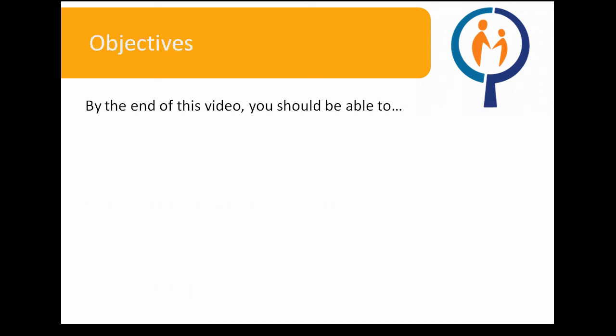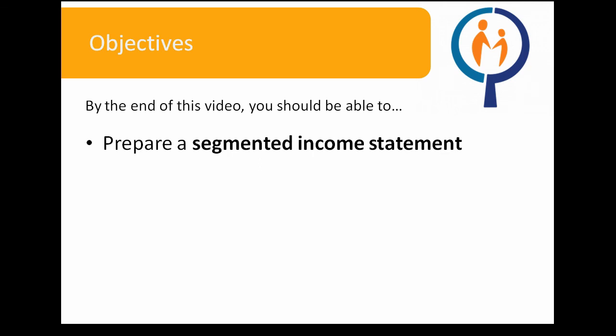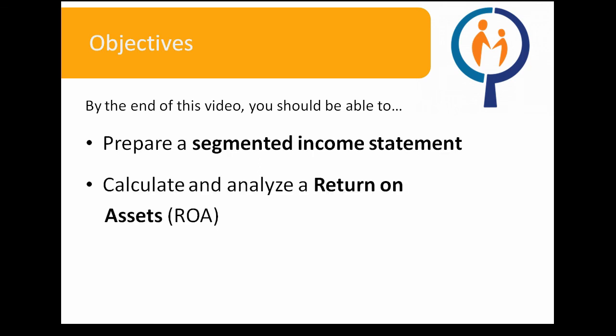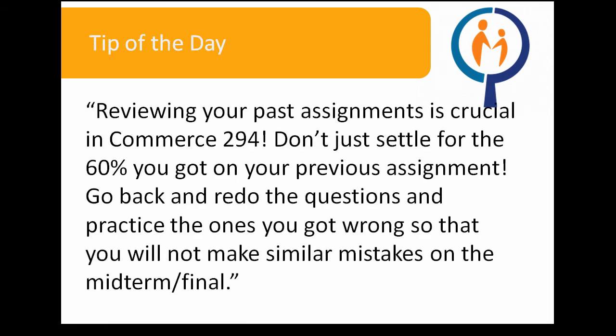This concludes our online tutorial on reporting for control. Let's review our objectives for today. By now, you should be able to prepare a segmented income statement, calculate and analyze a return on assets or ROA, and calculate residual income. Remember that reviewing your past assignments is crucial in COM 294. Don't just settle for the 60% you got on your previous assignment. Go back and redo the questions and practice the ones you got wrong so that you will not make similar mistakes on the midterm or final.